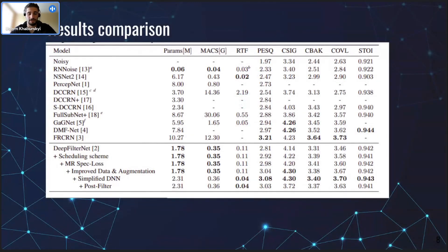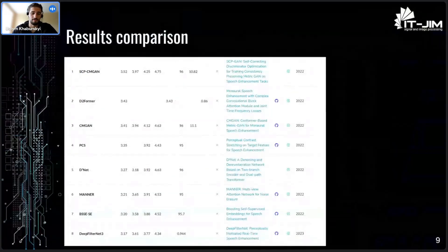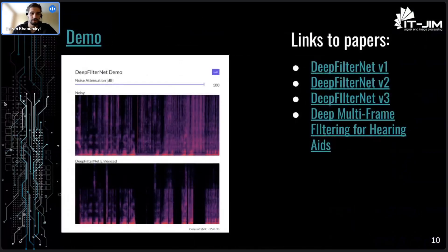This is a comparison of the second version with other models developed for real-time speech enhancement. For example, one very popular model was FullSubNet. It's important to note that FullSubNet measured its RTF during inference using batches, so the real per-sample value is a little bit higher. This model also has a virtual microphone feature, as mentioned before.